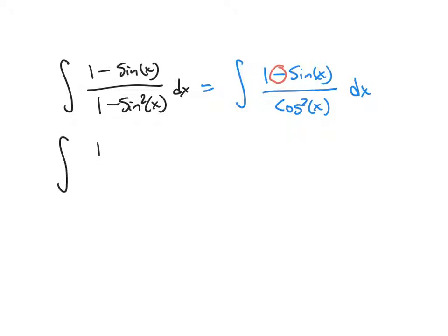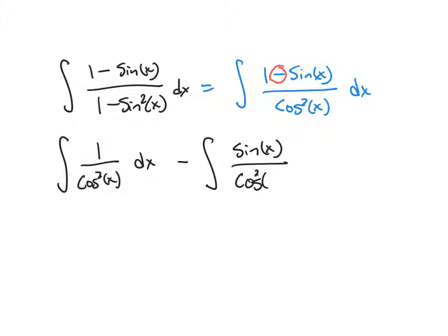We're going to make two integrals. On the left we'll have 1 over cosine squared of x, and if you've spent any time working with trig functions, you know there's a good identity that will replace that for us. On the other side we'll have sine of x over cosine squared of x. The reciprocal of cosine squared of x is just secant squared of x, and we've got that antiderivative memorized — that's a tangent.